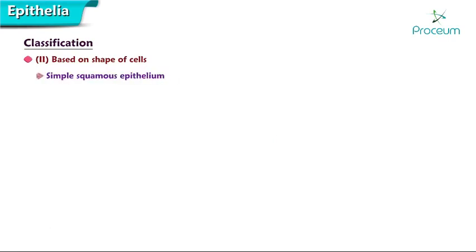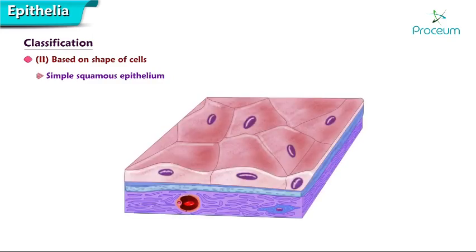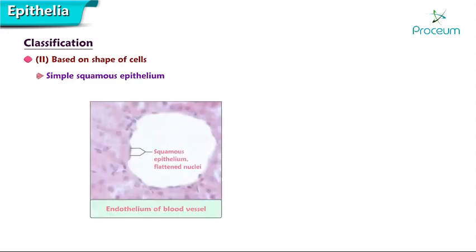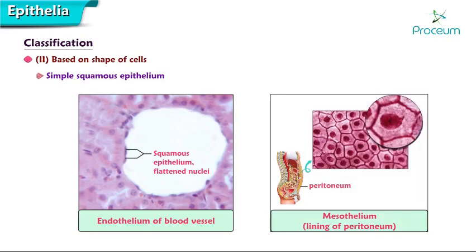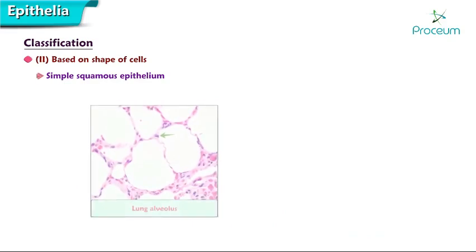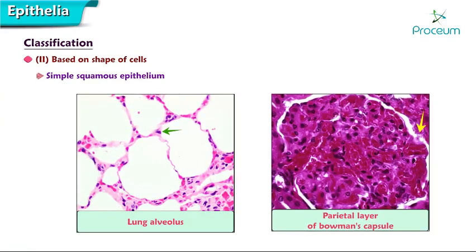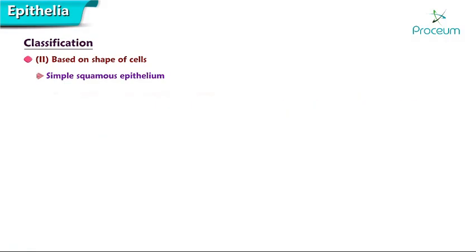Simple squamous epithelium: cells are flat plates with flat nuclei; the cytoplasm of cells forms only a thin layer and the nuclei produce a bulging of the cell surface. Occurrence includes the endothelium lining blood vessels, mesothelium lining the peritoneum and pleura, lung alveolus, and the parietal layer of Bowman's capsule. Functions include active transport by pinocytosis.